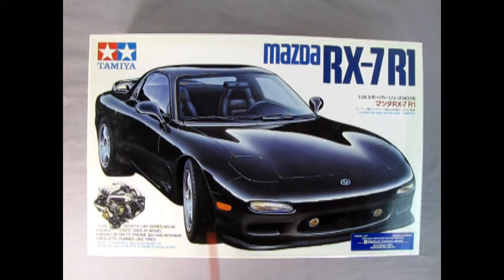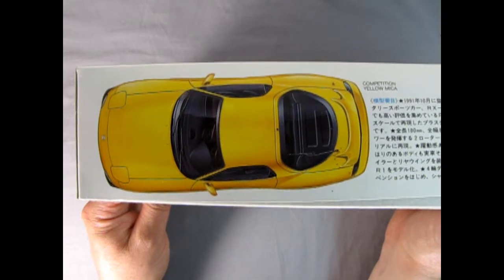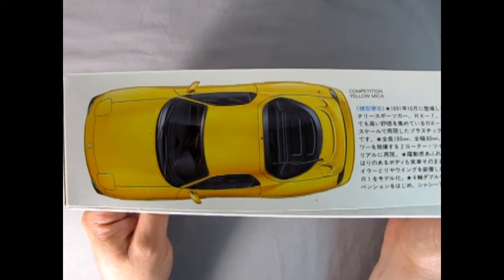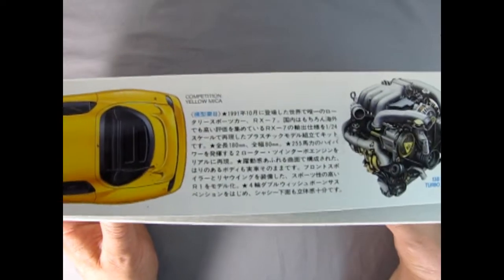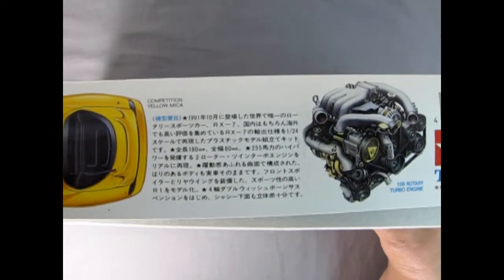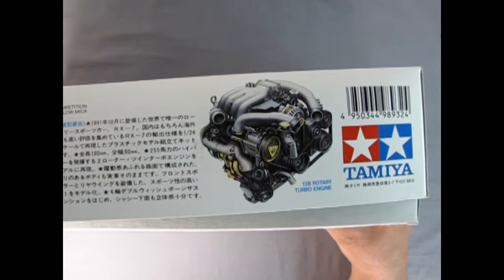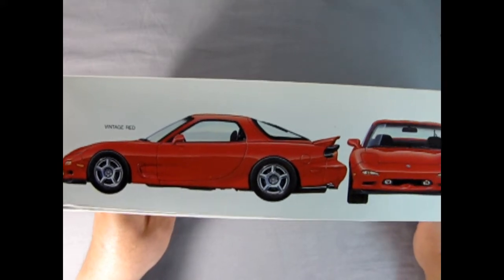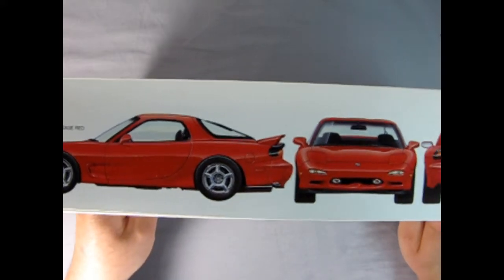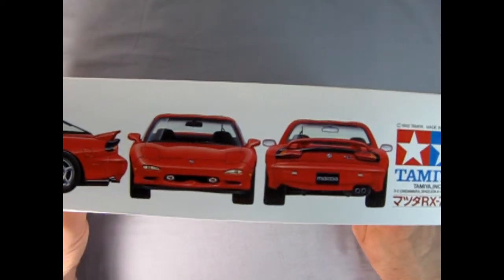So again we get this really nice drawn-out image and an image of our motor. On this side of the box we see a wonderful top view of our Mazda model kit painted in yellow. Then we get some specifications on the kit written in Japanese. And here we have our wonderful 13B rotary turbo engine. And turning the box onto the other side we can see a wonderful red Mazda with the side view, front view, and rear view of the car.